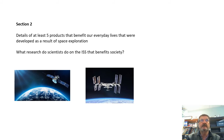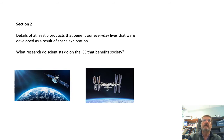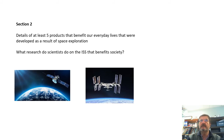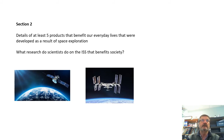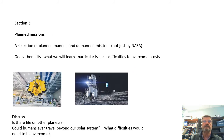Section 2 requires details of at least five products that benefit our everyday lives and were developed as a result of space exploration. One of them would be GPS — global positioning. Also, what research do scientists do on the ISS that benefits society today? It could involve making new materials, developing technology, developing medicines, or learning how to live in space — which could be very useful in the future. A good detailed report on products and science developed in space is needed here.